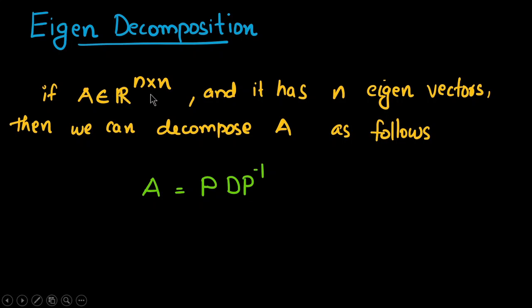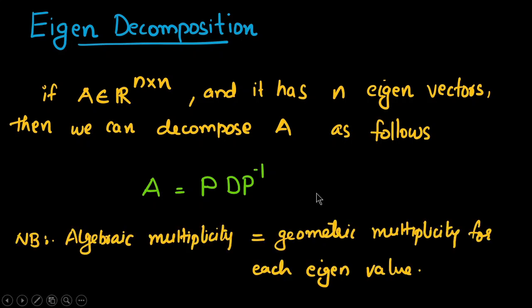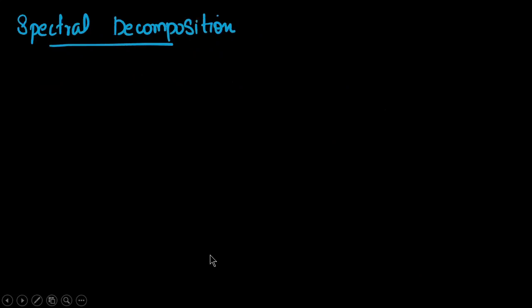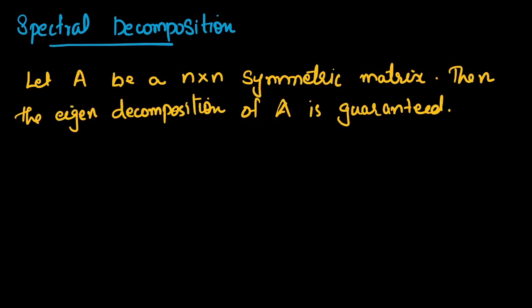This decomposition is possible only when A is a square matrix and has n eigenvectors. One more condition: the algebraic multiplicity must be equal to the geometric multiplicity for each eigenvalue. So the algebraic multiplicity should equal the geometric multiplicity.